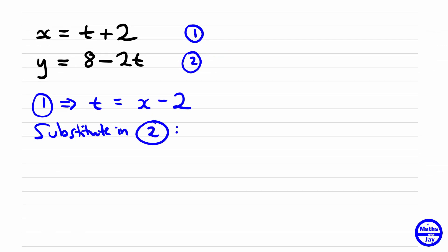Where we see the t in the second equation, we're going to replace that by x minus 2. You can see we have already eliminated t, so all we're going to do now is simplify this.